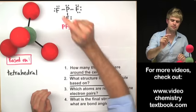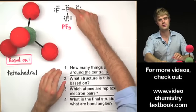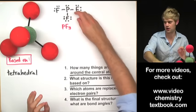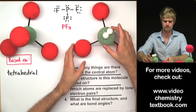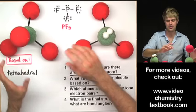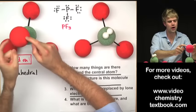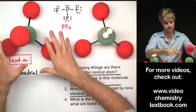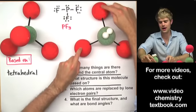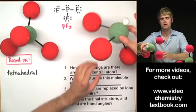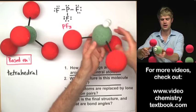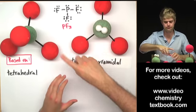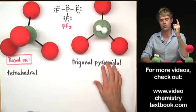In PF3, only three of the things surrounding the central atom are other atoms. One atom from the tetrahedral structure has been replaced by a lone electron pair. The shape looks very similar to tetrahedral, but one position is occupied by a lone pair instead of an atom. Four things total: three atoms and one lone electron pair. This gives us the trigonal pyramidal shape — what we get when four things surround a central atom, three are atoms, and one is a lone electron pair.